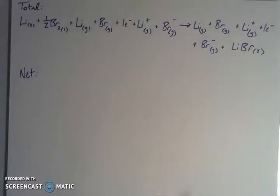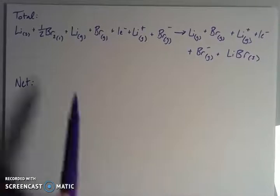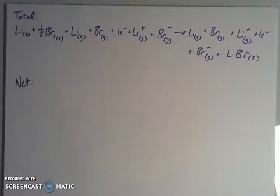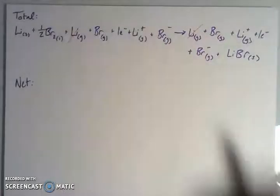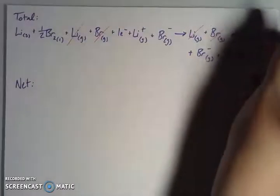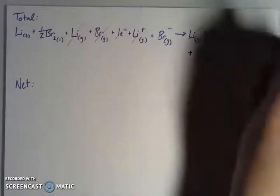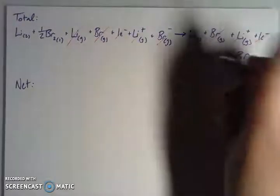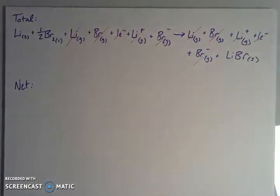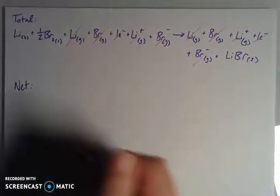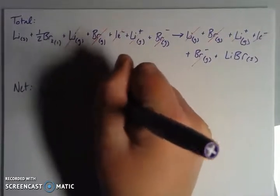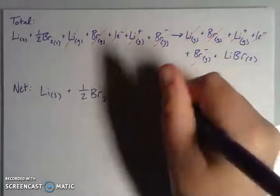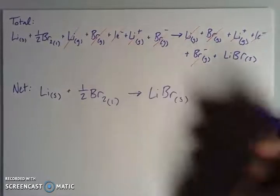So let's sum these up. I've taken all of my reactants, all of my products, and I want to get rid of the things that are in common on both sides. I see that I have lithium gas, and I have bromine gas, and I have an electron because I gained one, lost one, end up with gaseous lithium plus and gaseous bromide.